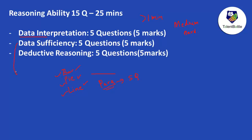In data sufficiency, there will be one question with two statements. You need to read the question and the two statements, then determine which statement is sufficient to answer the question — whether only statement one is sufficient, only statement two is sufficient, both one and two are required, or neither is sufficient.